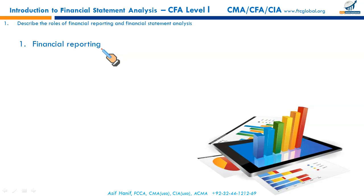Users of financial statements include regulators, internal users, external users, those with direct interest in the firm, and those with indirect interest like analysts. Financial reporting is all about the preparation of financial statements — balance sheet, income statement, statement of changes in equity, and cash flow statement. Each of these statements is covered in a separate reading and will be discussed in much more detail.